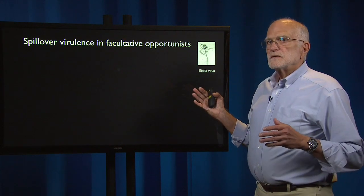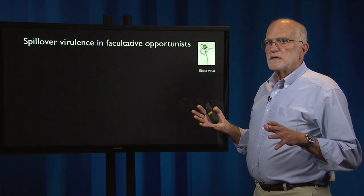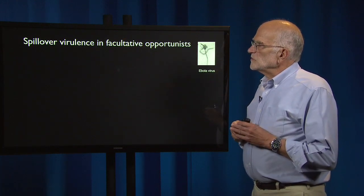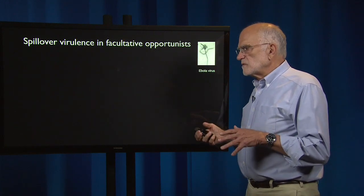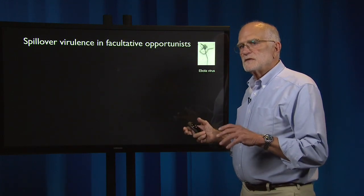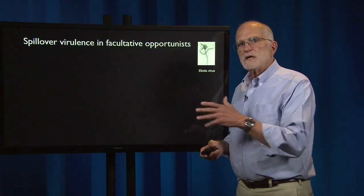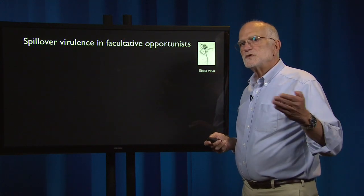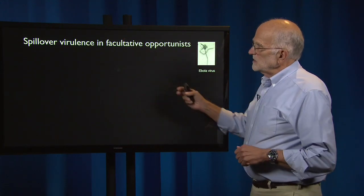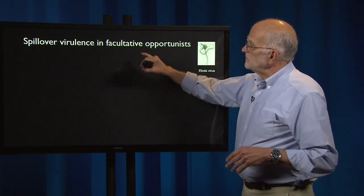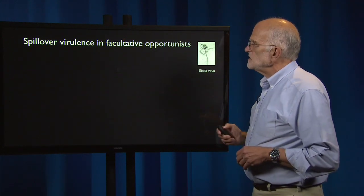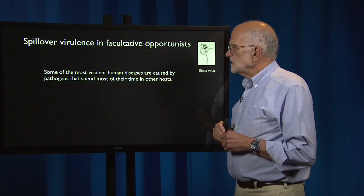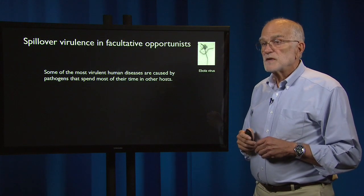Another interesting piece of virulence biology has to do with spillovers. A spillover occurs when a pathogen which is in a natural reservoir and is well adapted to its natural host encounters a new host and spills over into it. The question is then what is its virulence in that new host? It is a facultative opportunist. An example is Ebola. Some of the most virulent human diseases are caused by pathogens that actually spend most of their time in other hosts.